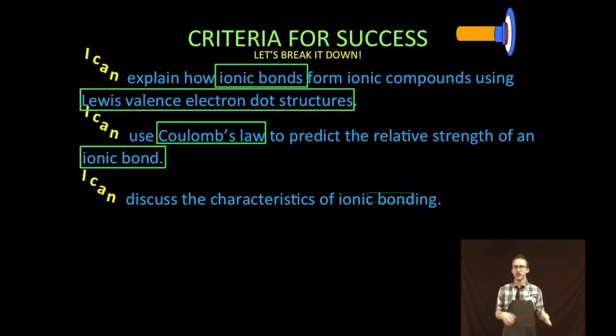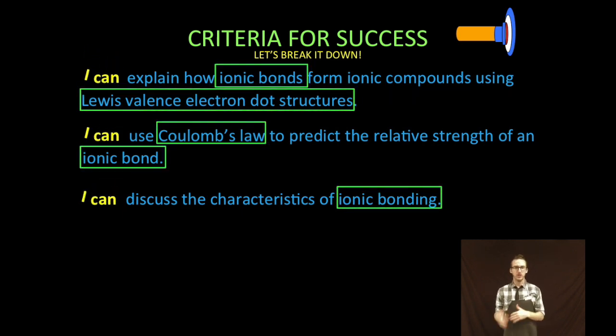First thing we are going to do, explain how ionic bonds form ionic compounds using Lewis valence electron dot structures. Number two, we're gonna use Coulomb's law, bringing it back, to predict the relative strength of an ionic bond. And then lastly we are going to discuss the characteristics of ionic bonding.